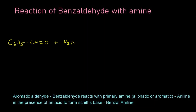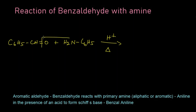The reaction takes place in the presence of acid on heating. This oxygen and these two hydrogens will get eliminated as a water molecule. The remaining parts will get attached together, so we get C6H5-CH= ...